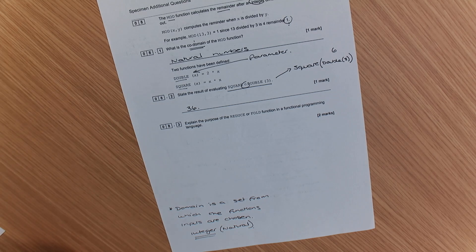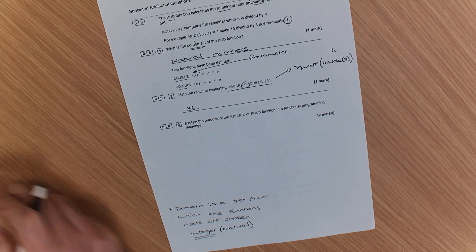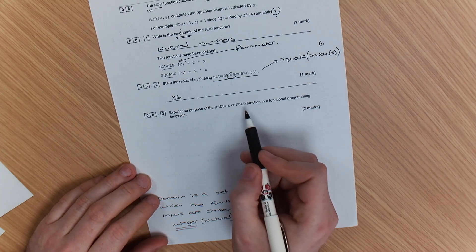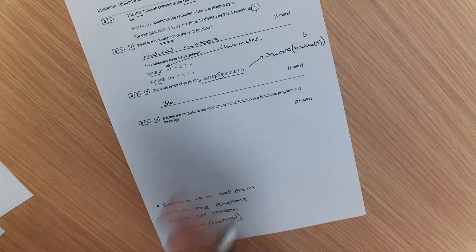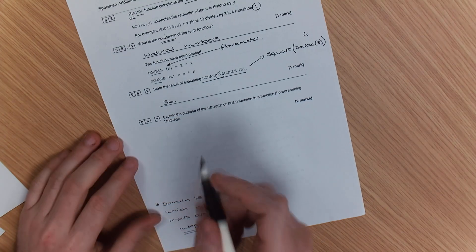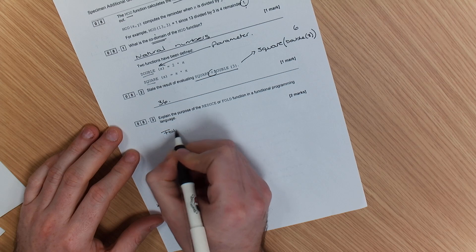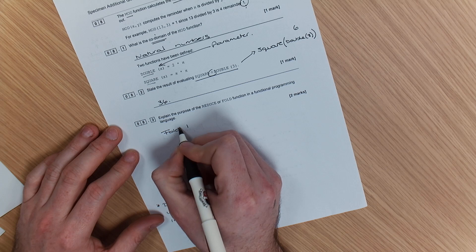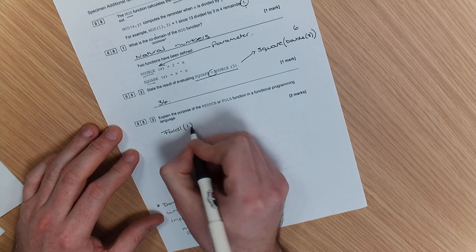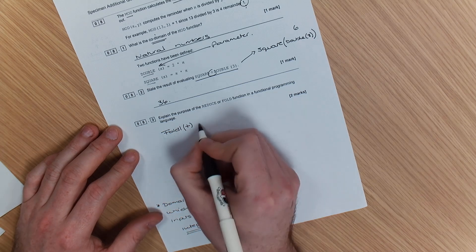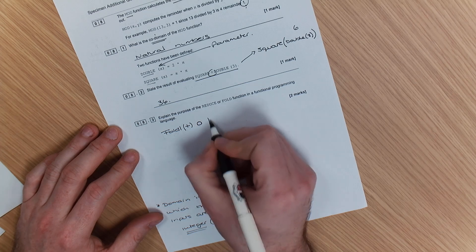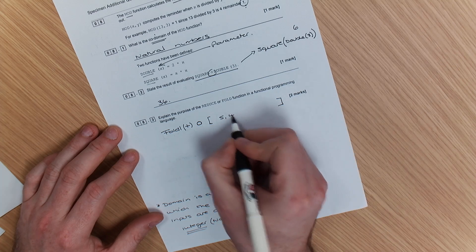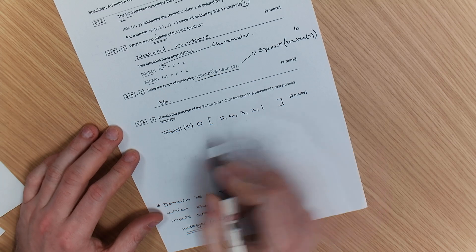Now, the last question on this section of questions asks you to explain the purpose of reduce or fold. Now, I'm just going to give you an example of how fold works. We've got fold one. Sorry, I'm going to call it fold one. And in brackets, I'm going to put plus. You have a starting number. I think it's better if you can visualize it, then you can start to get your question right. Five, four, three, two, one. So I've got fold,